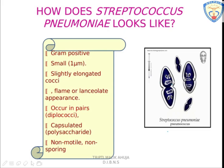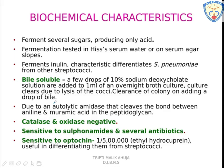The capsule is also antigenic in nature, made of polysaccharide. The appearance of the cocci is called the flame or lancet appearance. The bacteria is non-motile and does not form spores. It ferments a number of sugars; fermentation is tested in Hiss serum. Inulin sugar is fermented only by this bacteria, not by other streptococci.